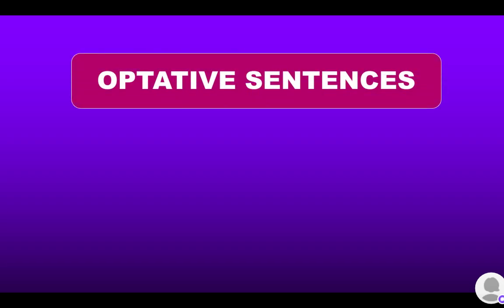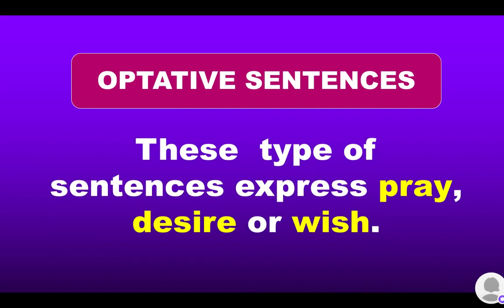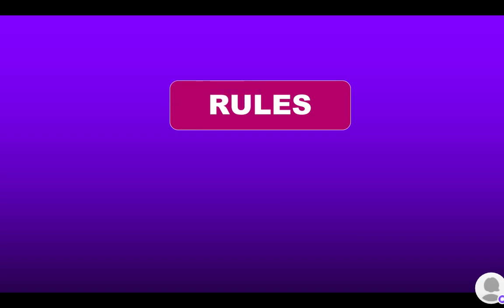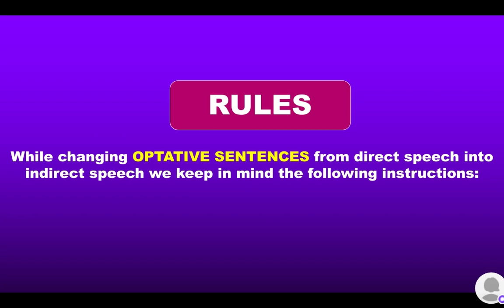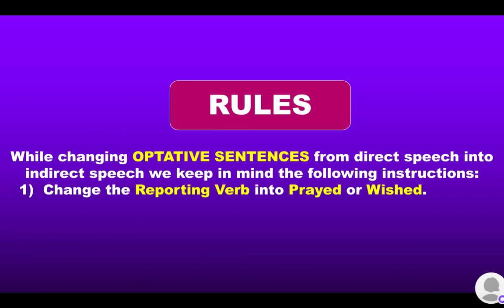Optative sentences — look at this definition. These type of sentences express pray, desire, or a wish. Rules while changing these sentences from direct speech into indirect speech: we keep in mind the following instructions. Change the reporting verb to express a wish, using 'that'.